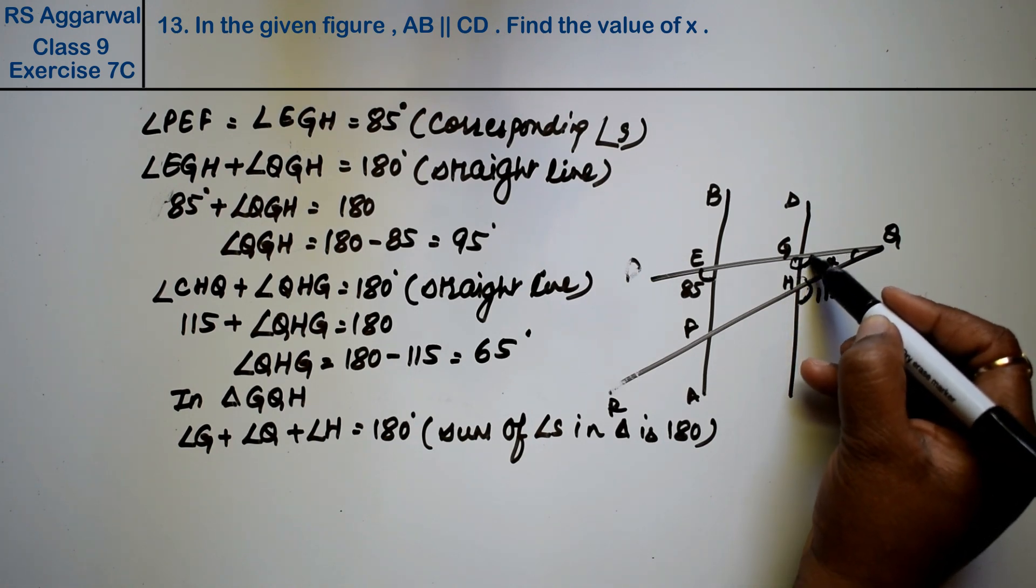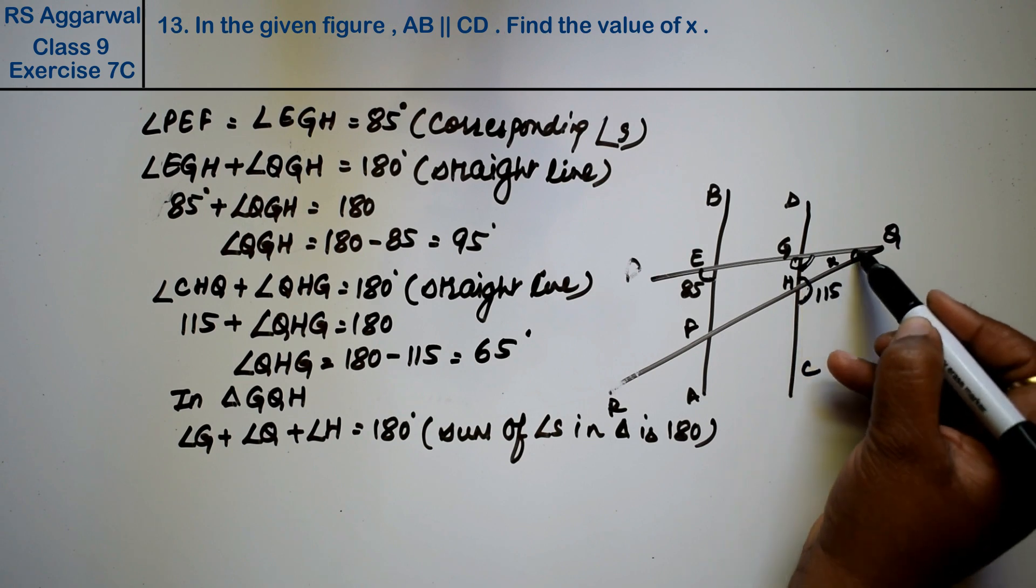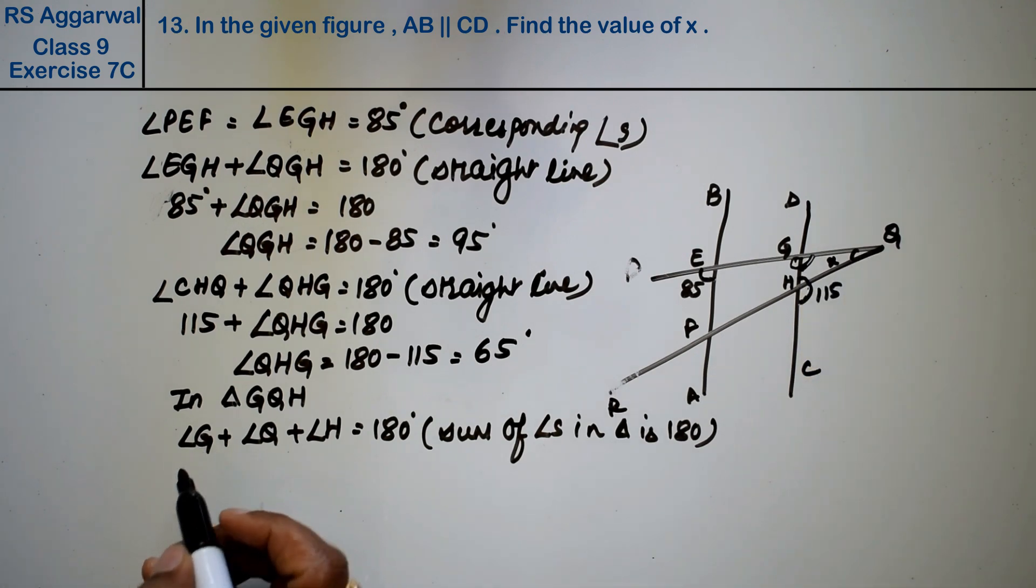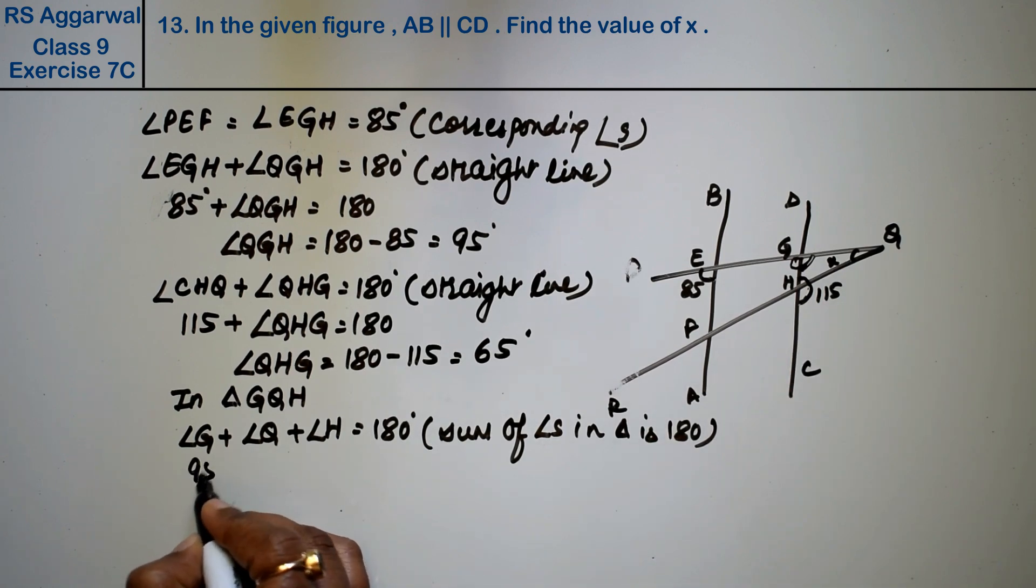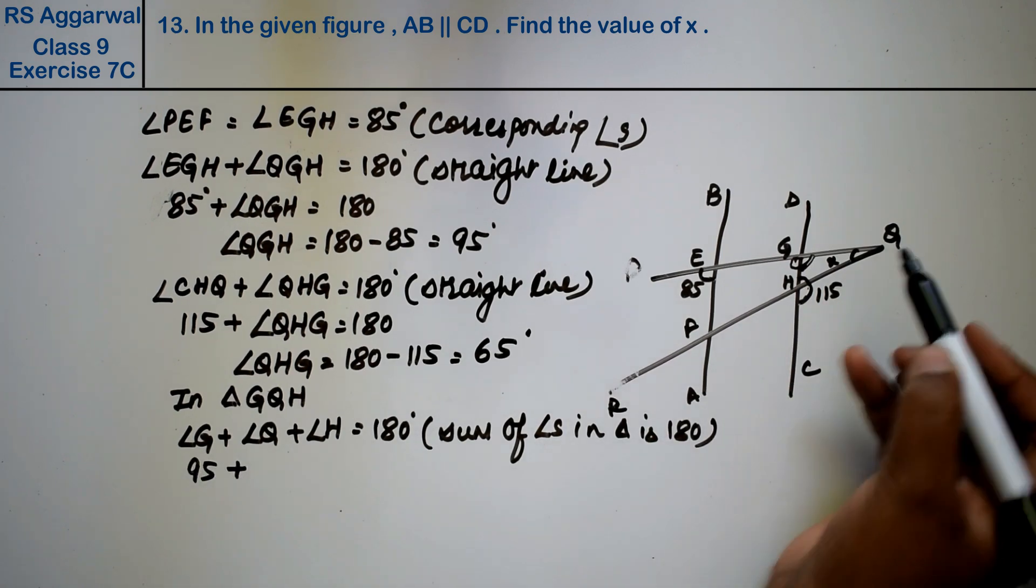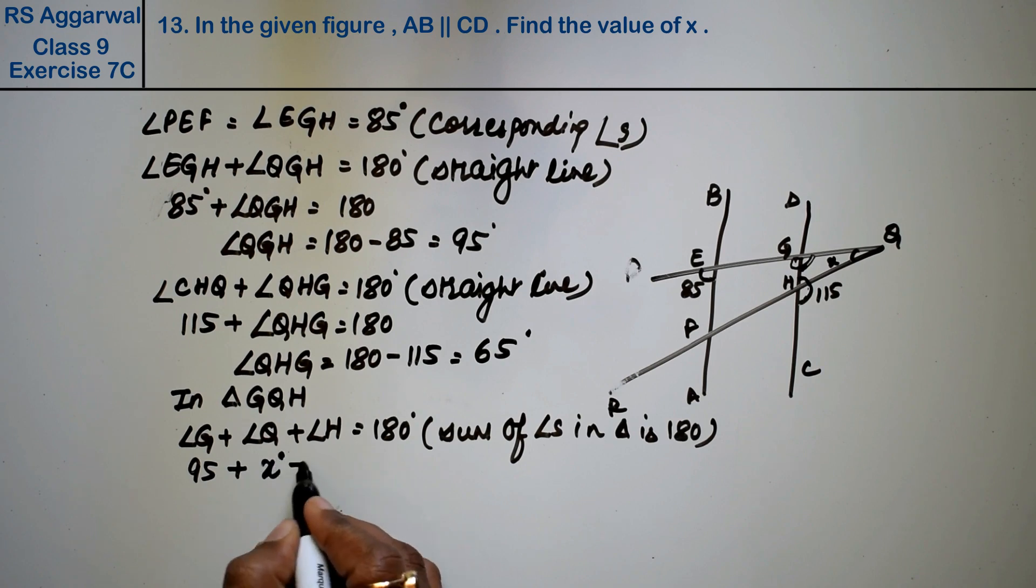This angle G, this H, and this Q. Now angle G, how much was this angle? 95 degrees. Angle Q is x degrees, and angle H is 65 degrees.